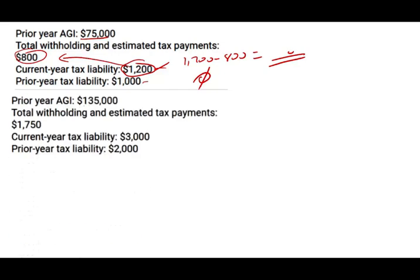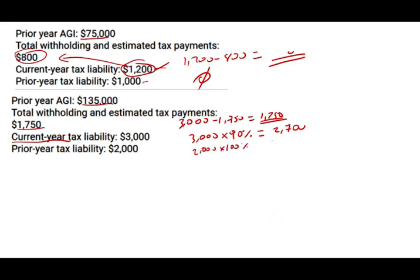Example two: prior year AGI $135,000. Total withholding and estimated tax payment $1,750. Current tax liability $3,000. Prior year tax liability $2,000. First, determine if the obligation is more than $1,000: $3,000 minus $1,750 equals $1,250 — so I have to do more. Take the lesser of 90% of the current year ($3,000 × 90% = $2,700) or 100% of the prior year ($2,000 × 100% = $2,000). The lesser is $2,000. $2,000 minus $1,750 equals $250. The underpayment penalty is based on $250.